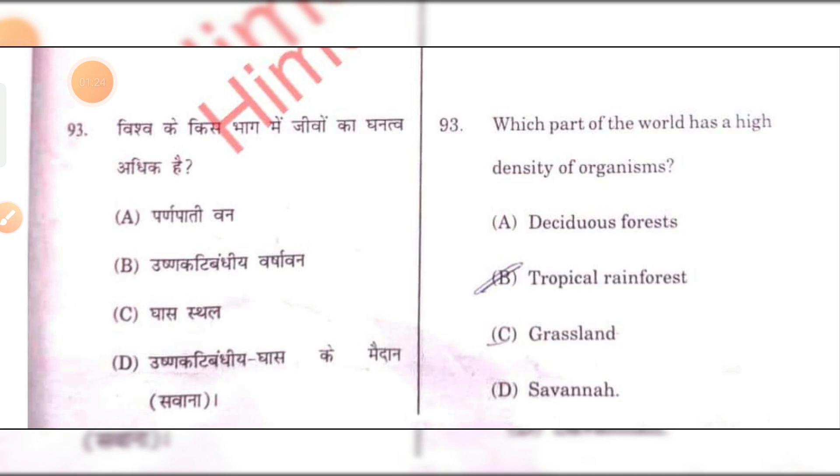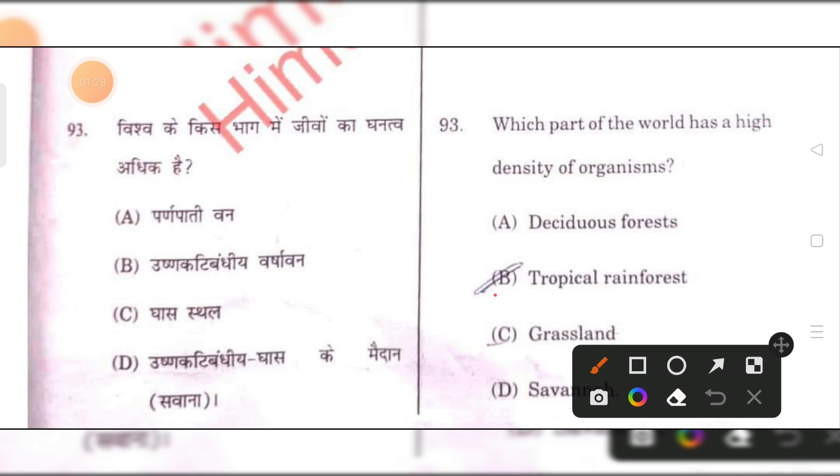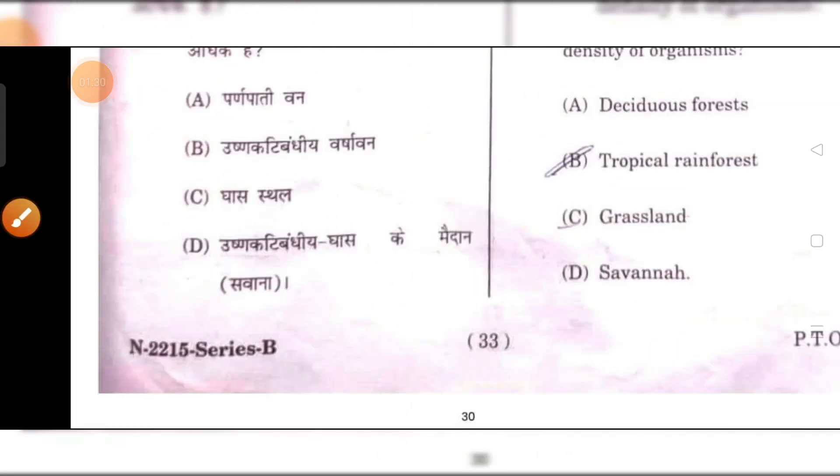Which part of the world has the highest density of organisms? Tropical rainforest. B is the right answer.